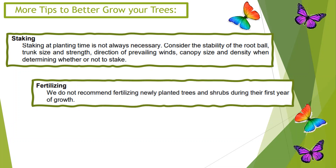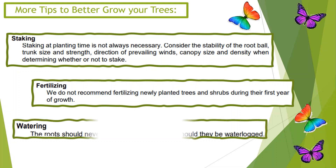Tip 18 and 19: Fertilizing — we do not recommend fertilizing newly planted trees and shrubs during their first year of growth. Tip 20: Watering — the roots should never dry out completely, nor should they be waterlogged.